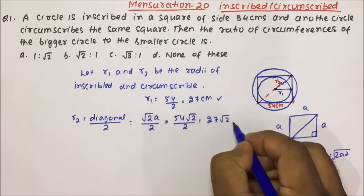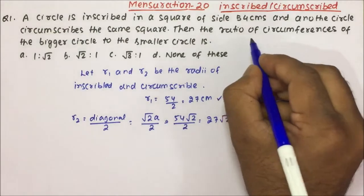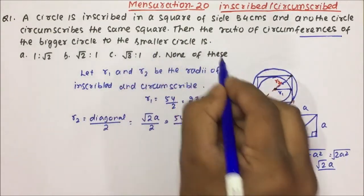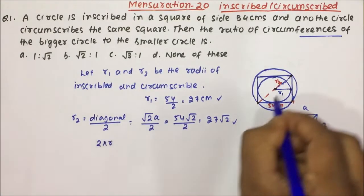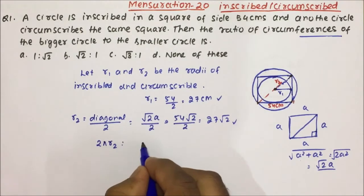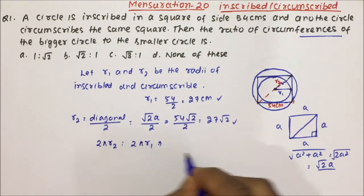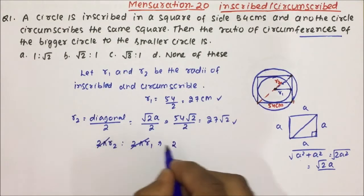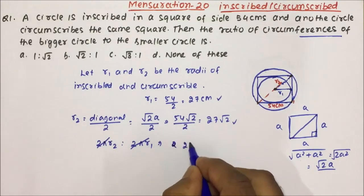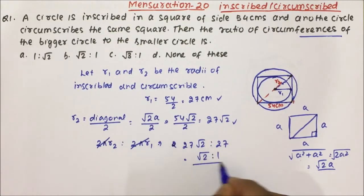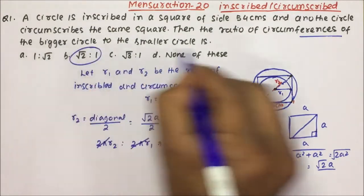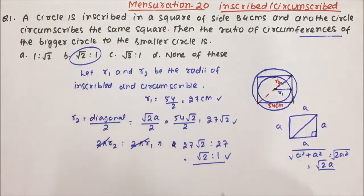Now I have R1 and R2. What has been asked is the ratio of circumferences of the bigger circle to the smaller circle. The circumference of the bigger circle is 2πR2, and of the smaller circle is 2πR1. The 2π cancels out, leaving R2 to R1, which is 27√2 to 27, giving us √2 : 1. So √2 : 1 is the ratio of circumferences of the bigger circle to the smaller circle. This was a very important and interesting question.